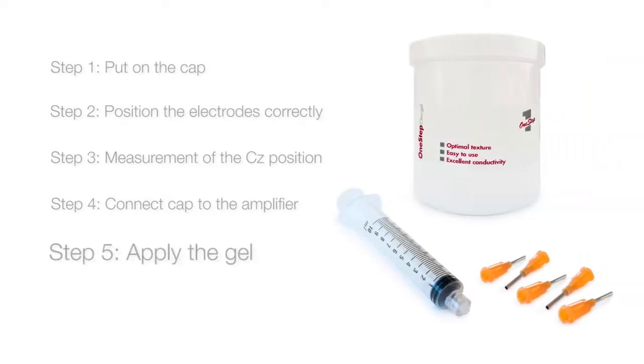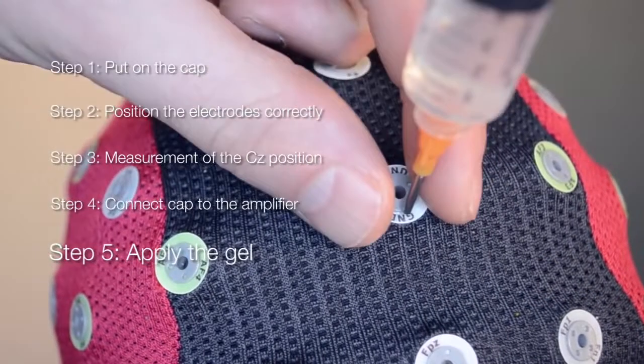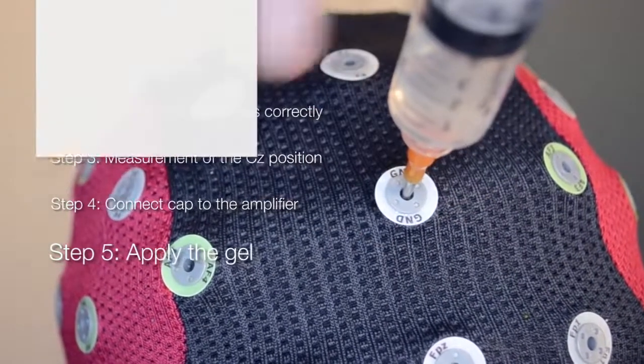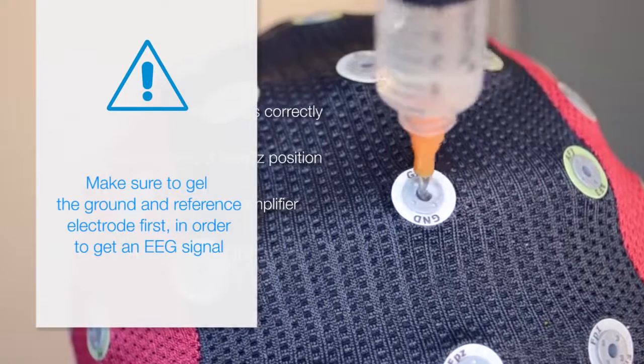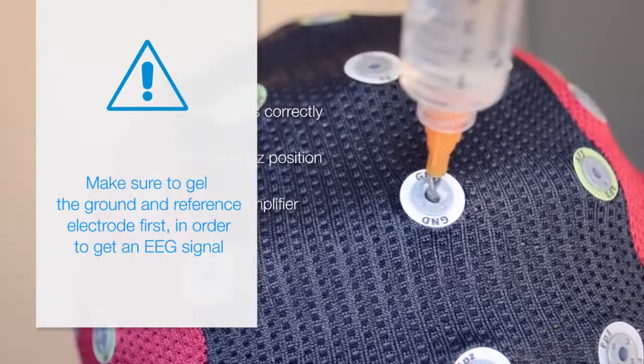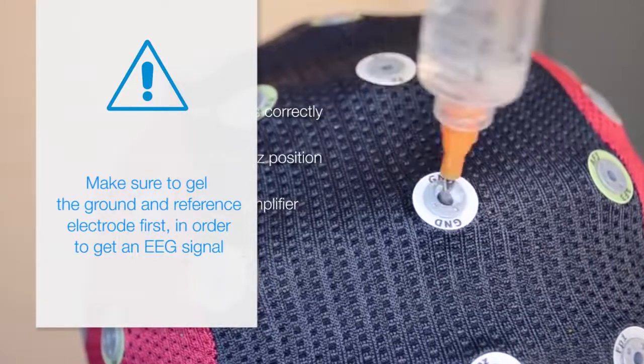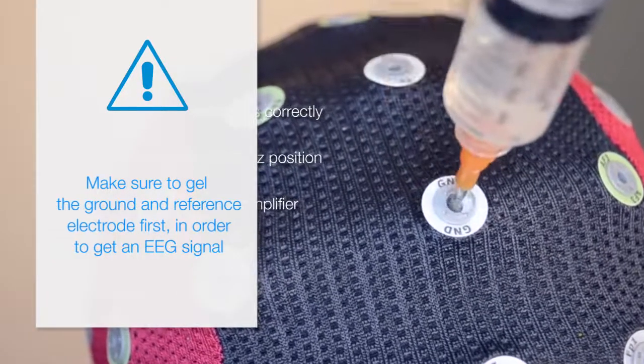Apply gel using a dedicated syringe. Blunt needles allow for easy insertion of gel through the hole at the top of each electrode. Fill the syringe with gel and inject a small amount through the hole in each electrode. Apply the gel with a circular hand movement. Continue the flow of gel as the needle is withdrawn to ensure that the electrode cup is fully filled.